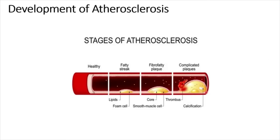Smooth muscle fibers that multiply and cover the foam cell form a fibrous cap. The function of the fibrous cap is to wall off the core from the endothelium and the blood. The core is enriched with low-density lipoprotein, the LDL. If the plaque ruptures, platelets will adhere to the arterial wall and a thrombus will be formed. Thrombus is a blood clot that can block the artery.